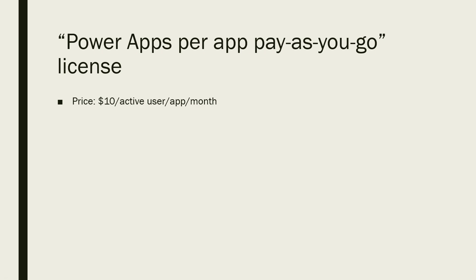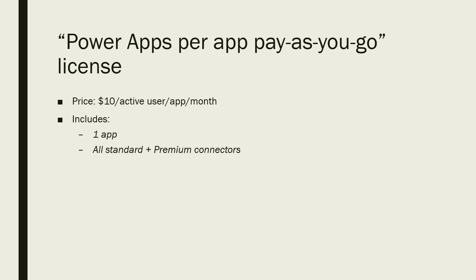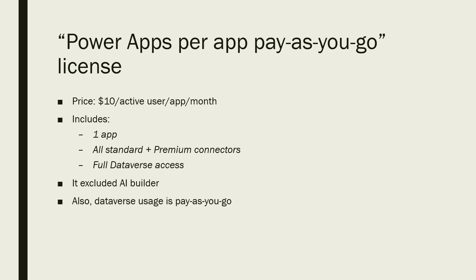A good use case: suppose you have one application shared with 10,000 users, but only 5 users actively use it each month — you will be charged only for those 5 users, not all 10,000. This license includes one app, all standard plus premium connectors, and full Dataverse access. Note that AI Builder is excluded, and Dataverse usage is also pay-as-you-go.